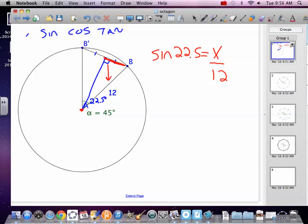So multiply both sides by 12. And we get 12 times the sine of 22.5 equals X. So pop up your calculator, let's do that. So we have 22.5 sine of that, times 12, equals 4.534 equals X.